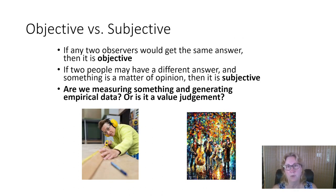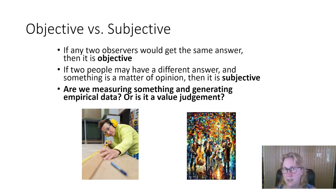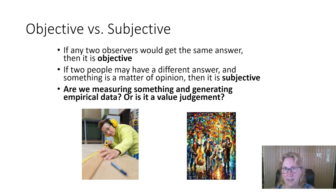In science we want objective data. If something is objective, it means any two observers will get the same answer. If you give everybody a thermometer and ask them to find the temperature outside, pretty much everybody will get the same answer. But if you ask them whether it's hot or cold or comfortable, everybody will have a different answer — that's subjective. It can change depending on the observer: if you've just been running you might not think it's cold outside, but if you've been sitting studying for two or three hours, you might think it is cold, even though the temperature is exactly the same.